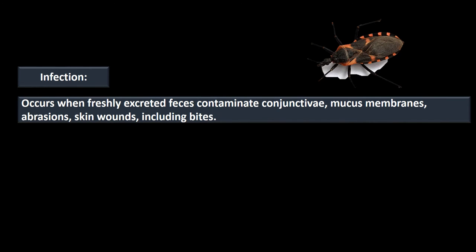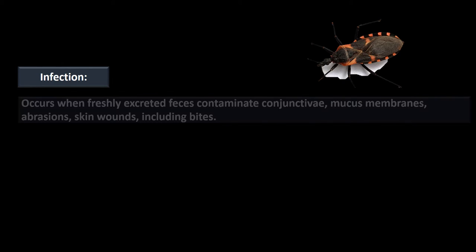Infection occurs when freshly excreted feces containing Trypanosoma cruzi contaminate the conjunctiva, mucous membranes like the lips and mouth, or any openings in the skin such as abrasions, skin wounds, or even the bites the bugs themselves cause. When these bugs have their nocturnal blood meal and suck your blood, they excrete feces into the bite wound, infecting you with that protozoan Trypanosoma cruzi.